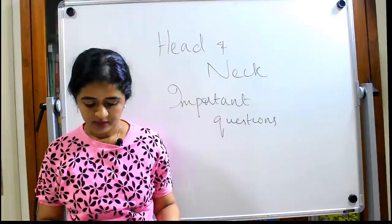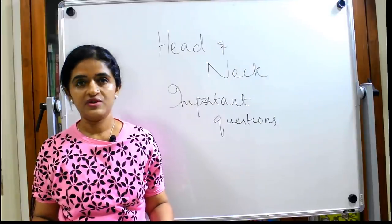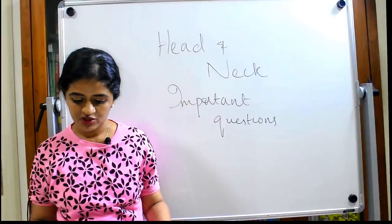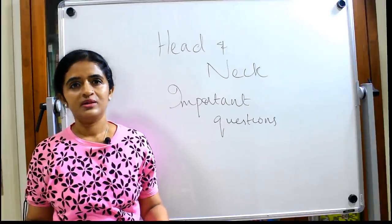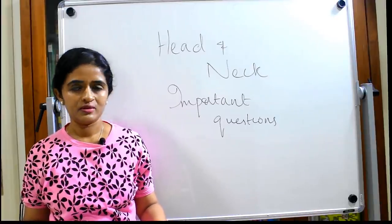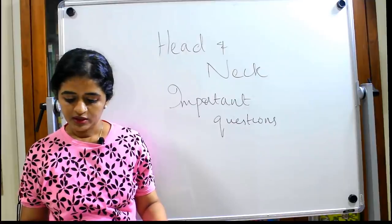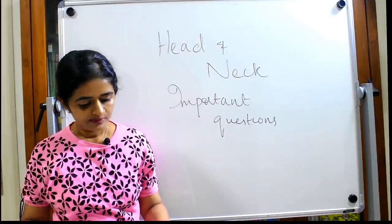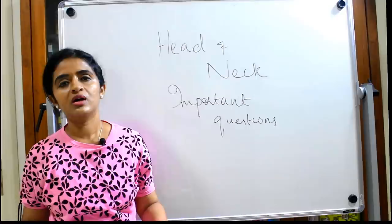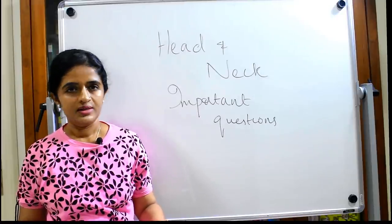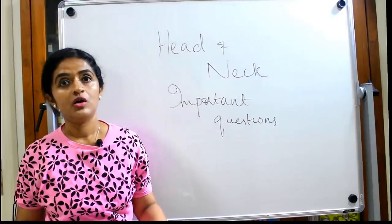Coming to the next chapter on skin, superficial fascia, and deep fascia. Among these, the platysma muscle is a favorite question. Then the deep fascia of the neck — fascia colli — is a very favorite question.